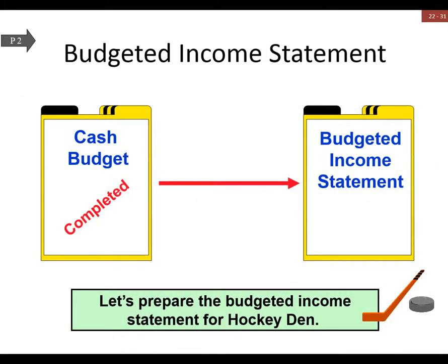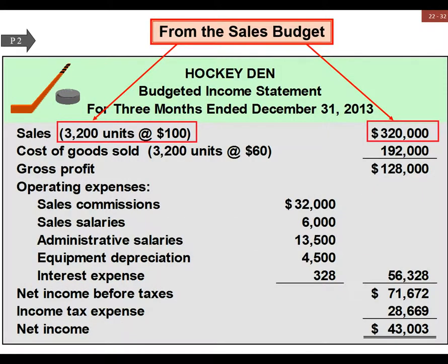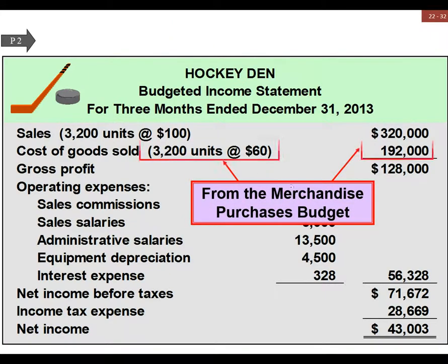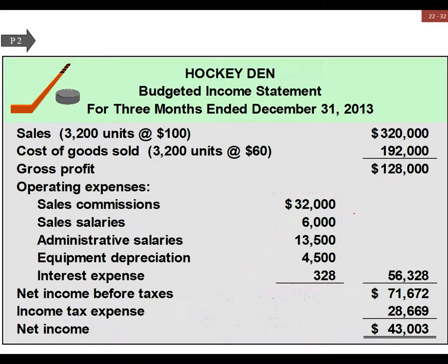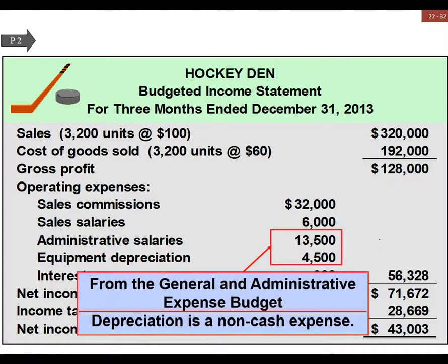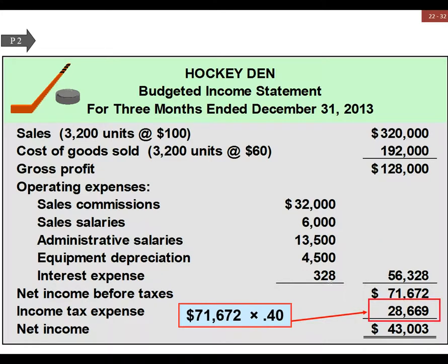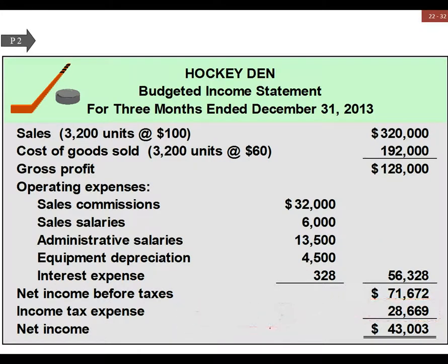So that's the cash budgeting. Once we have that in place, we're able to roll over and build our budgeted income statement and budgeted balance sheet. The income statement pulls from the sales budget, the purchases budget for cost of goods sold, the selling expense budget, and general and admin expenses. Then we apply an income tax rate of forty percent, and the resulting net income is used as we build our budgeted balance sheet.